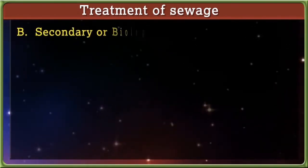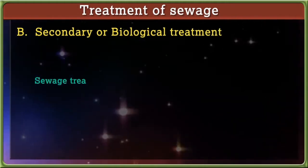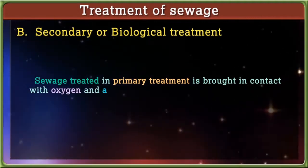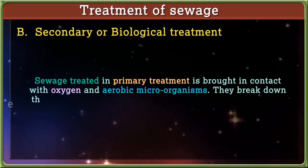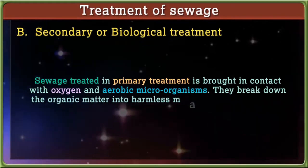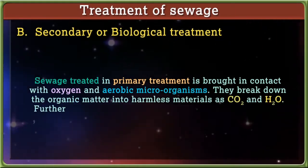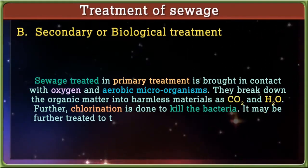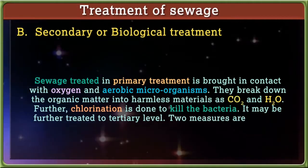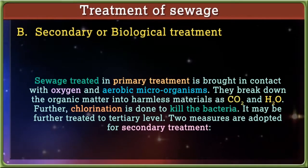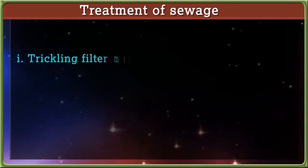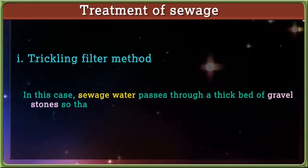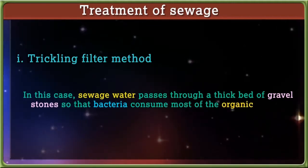B. Secondary or biological treatment: Sewage treated in primary treatment is brought in contact with oxygen and aerobic microbial acids, which break down the organic matter into harmless materials as CO2 and H2O. Further chlorination is done to kill the bacteria. Two measures are adopted for secondary treatment: 1. Trickling filter method: Sewage water passes through a thick bed of gravel stones so that bacteria consume most of the organic matter.